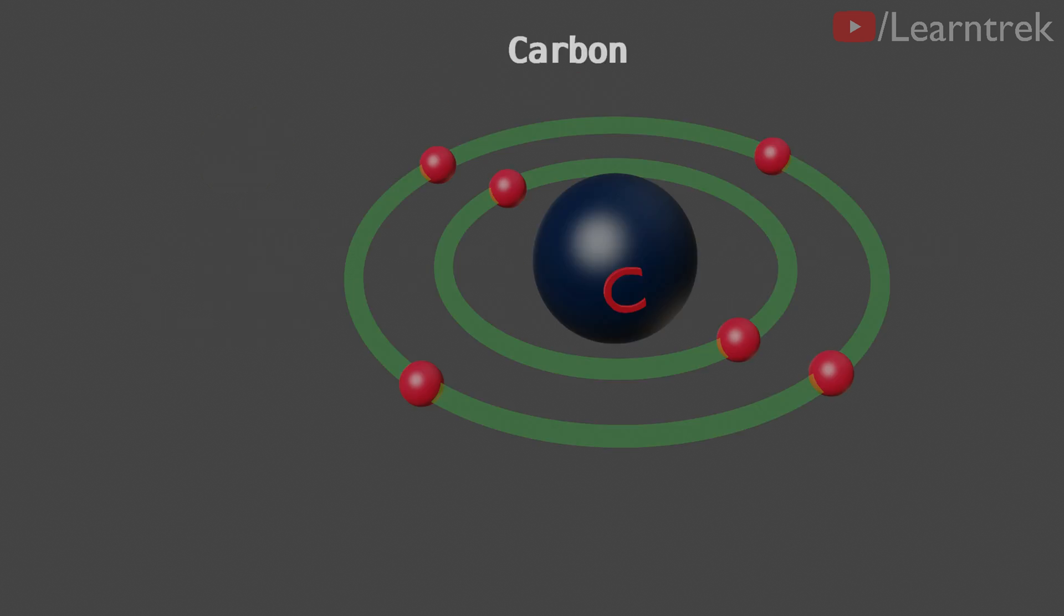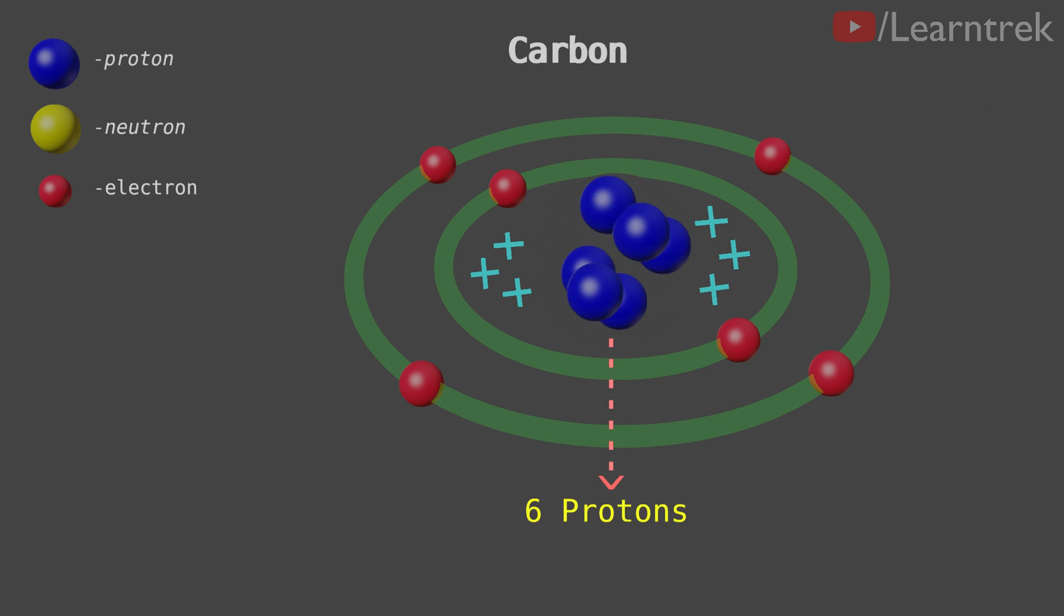Because carbon has 6 positively charged protons and 6 negatively charged electrons. If carbon loses its valence shell electrons one by one, then the net effect of protons' positive charge on the remaining electrons would increase, and the remaining electrons will more strongly attract towards the nucleus. As a result, the remaining last two valence shell electrons will require a lot of energy to remove, in comparison to the first two valence shell electrons.